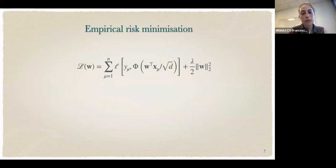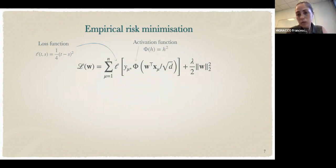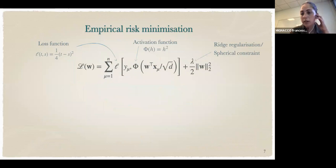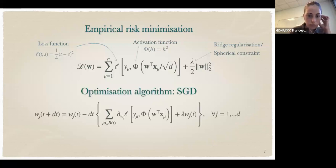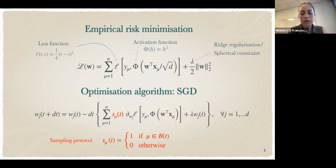Learning is done through empirical risk minimization when we have a sum over all the samples of a loss function. In this case it's square loss with an activation function that's the label squared, simply because we do not have access to the phase. Then we can add regularization, which can either be ridge, or in this case we will consider a spherical constraint. The optimization algorithm is SGD. The weights are updated in the direction of the gradient, but this gradient is computed only on a subset b of samples that is updated at each time. We can rewrite the algorithm introducing a binary variable s_mu associated to each sample, and its evolution defines the sampling protocol.